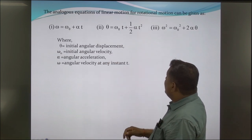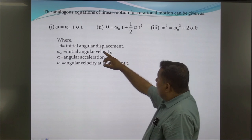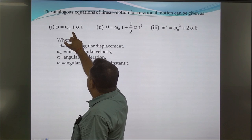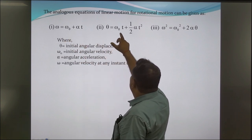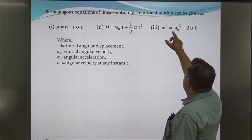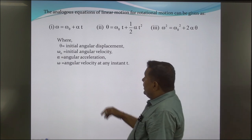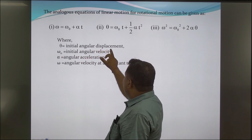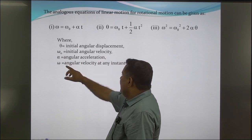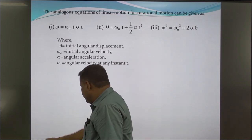The analogous equations of rotational motion corresponding to linear motion are: first, ω = ω₀ + αt; second, θ = ω₀t + ½αt²; third, ω² = ω₀² + 2αθ. Where θ is the angular displacement, ω₀ is the initial angular velocity, α is the angular acceleration, and ω is the angular velocity at instant t.